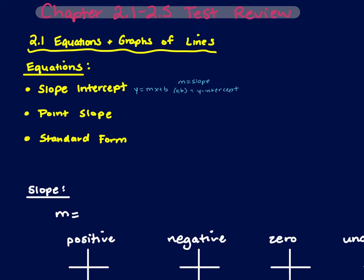Then we had point-slope, which is y minus y1 equals m times x minus x1. Here x1, y1 is the point that we plug into, and m is the slope. Those two we use interchangeably if we're trying to find the equation of a line — we take the information and plug it into those equations and then solve.